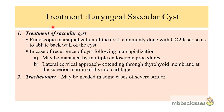The treatment of laryngeal saccular cyst is endoscopic marsupialization of the cyst, most commonly done with carbon dioxide laser, with the aim to ablate the back wall of the cyst. If it recurs following marsupialization, it can be managed by multiple endoscopic procedures or by an external lateral cervical approach — where the incision extends to the thyrohyoid membrane at the superior margin of the thyroid cartilage and through this window the cyst wall is excised. Some infants may also need tracheotomy if there is severe respiratory obstruction.